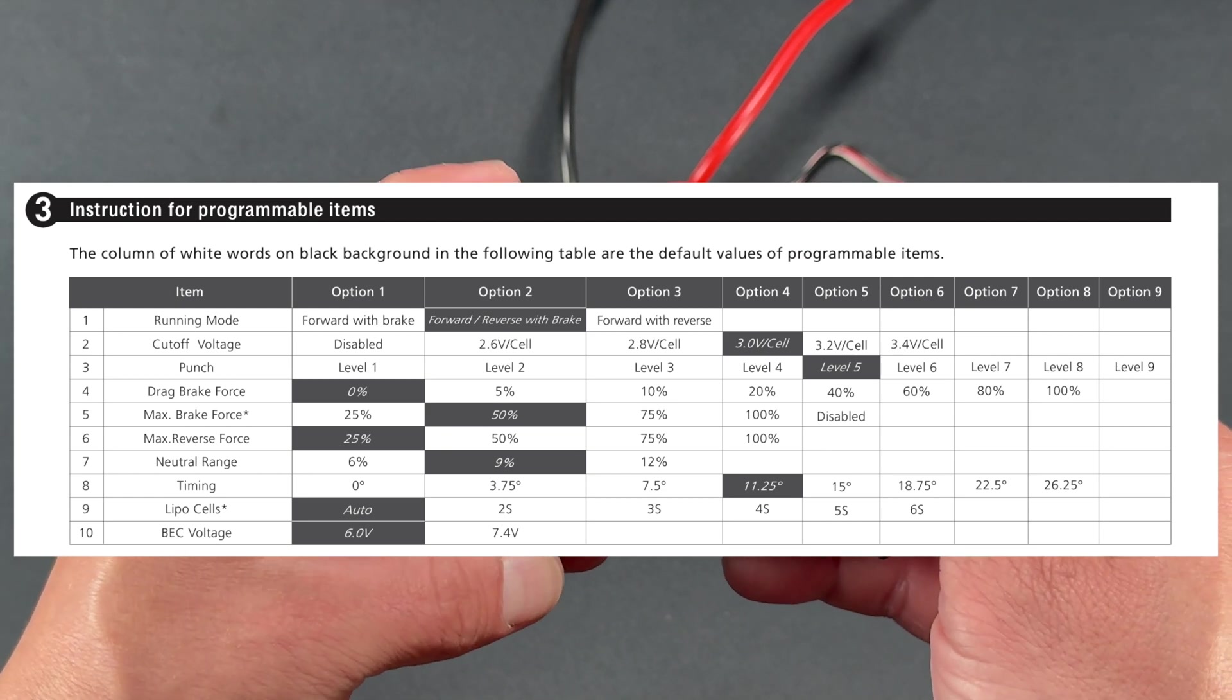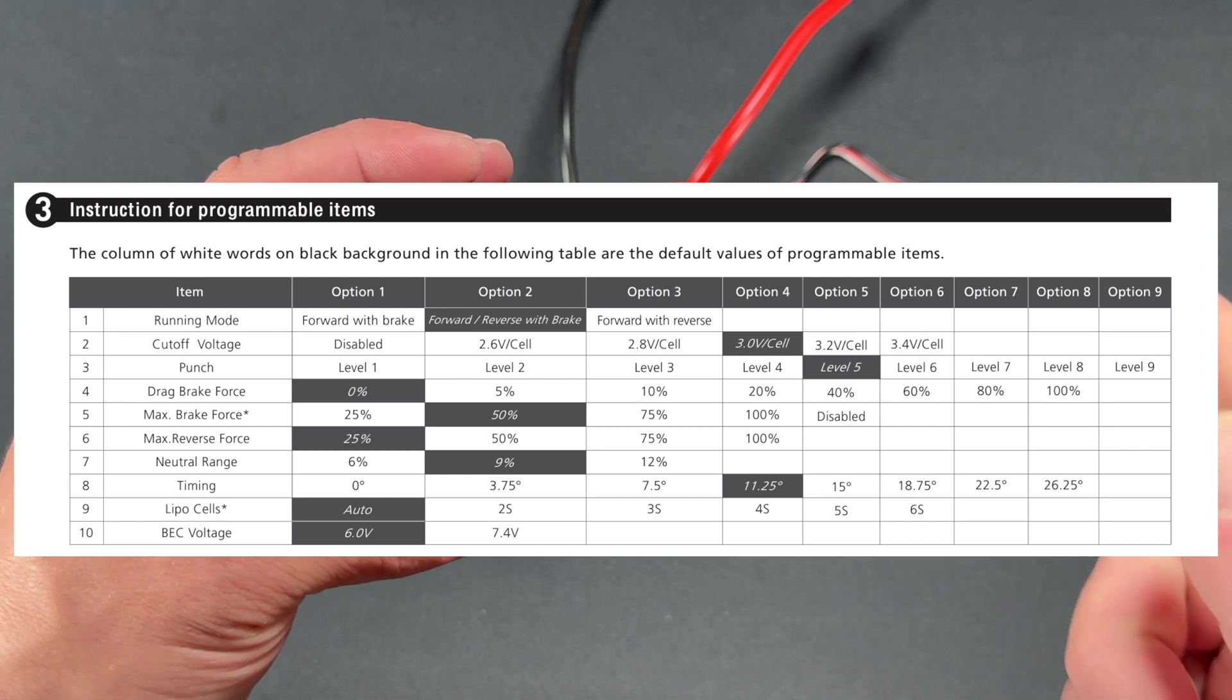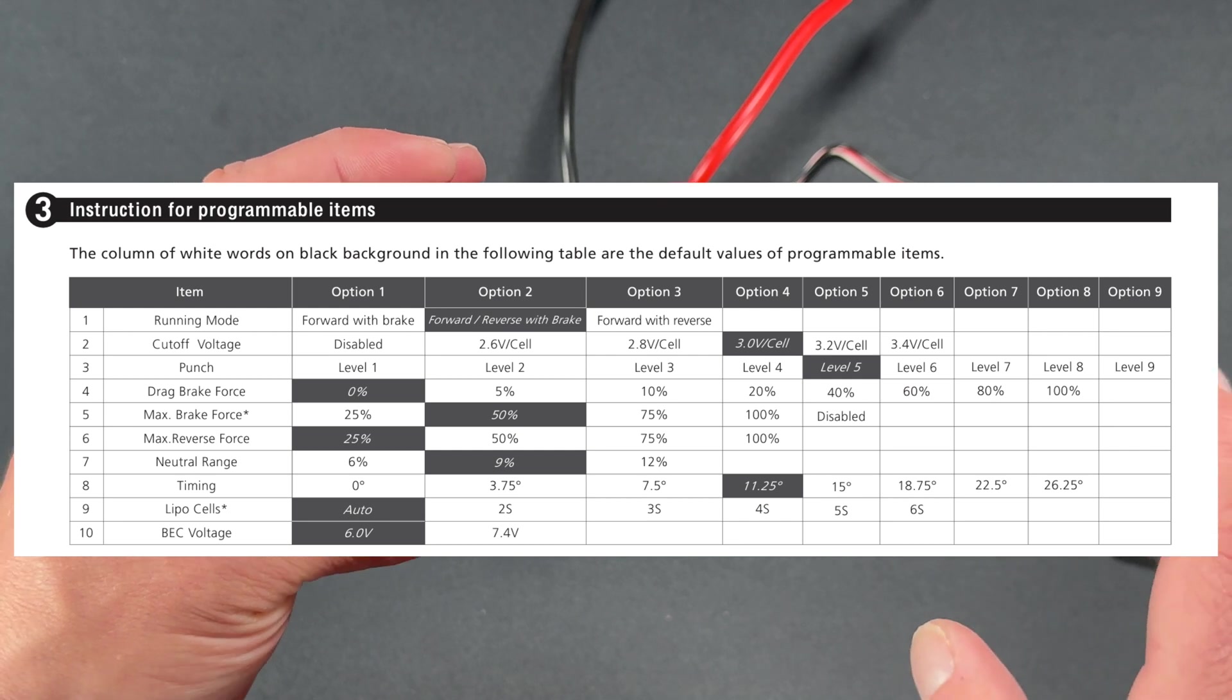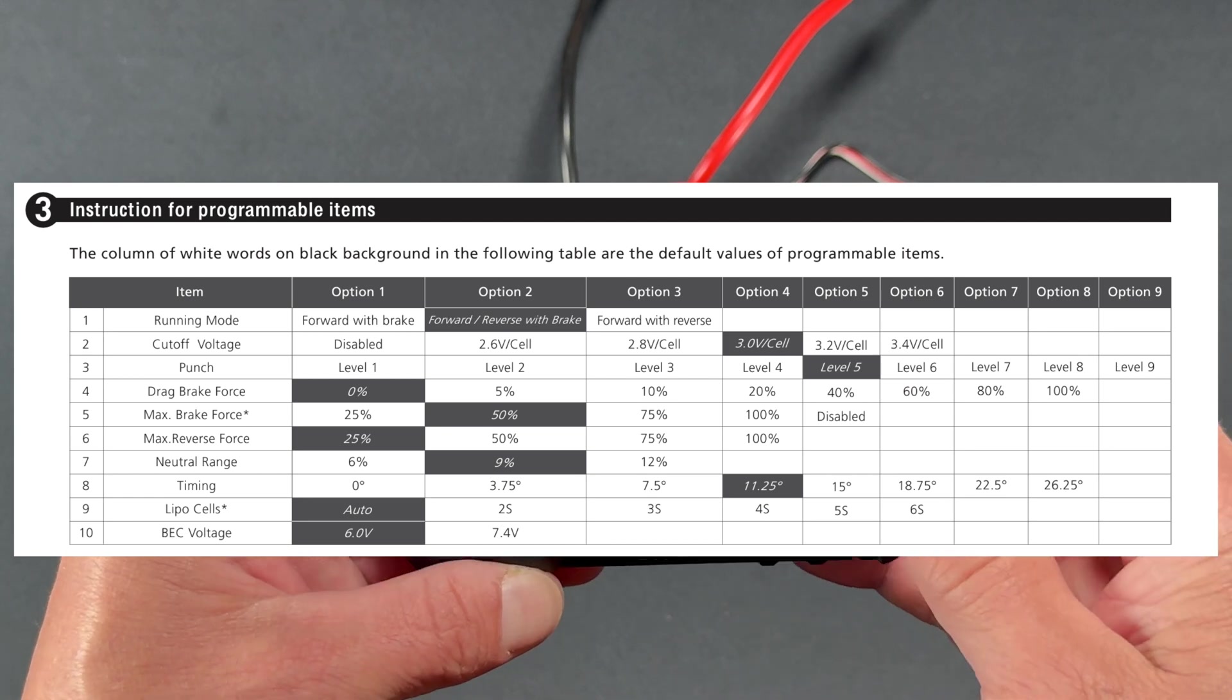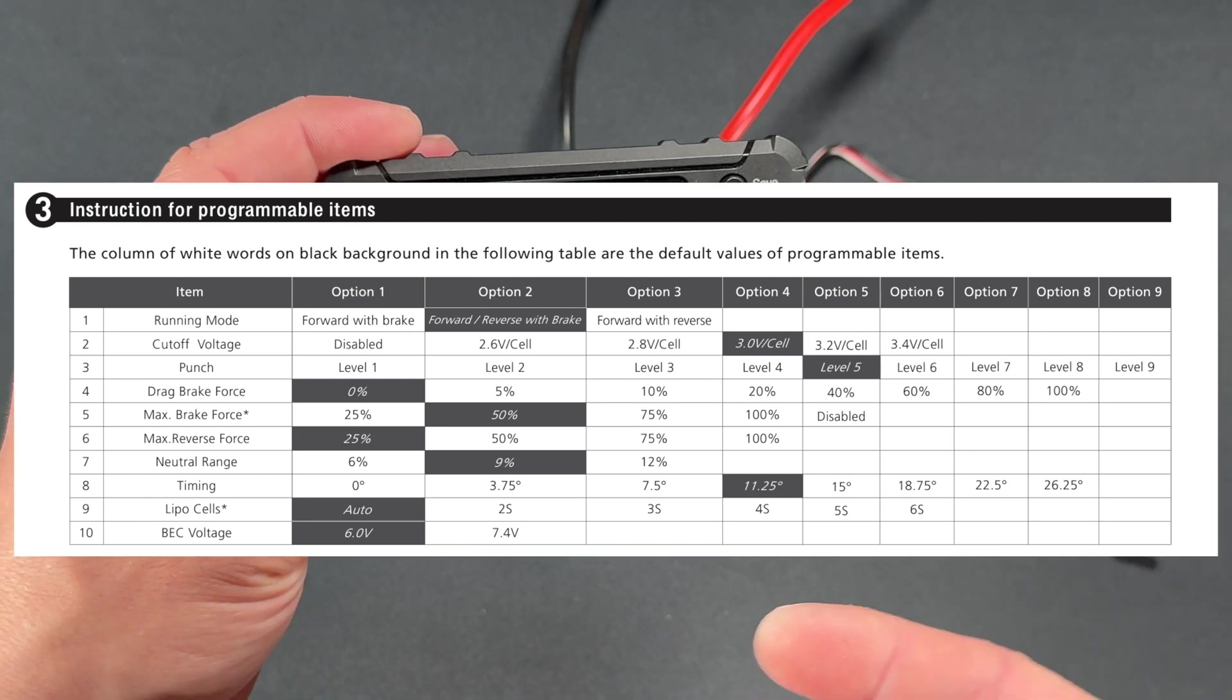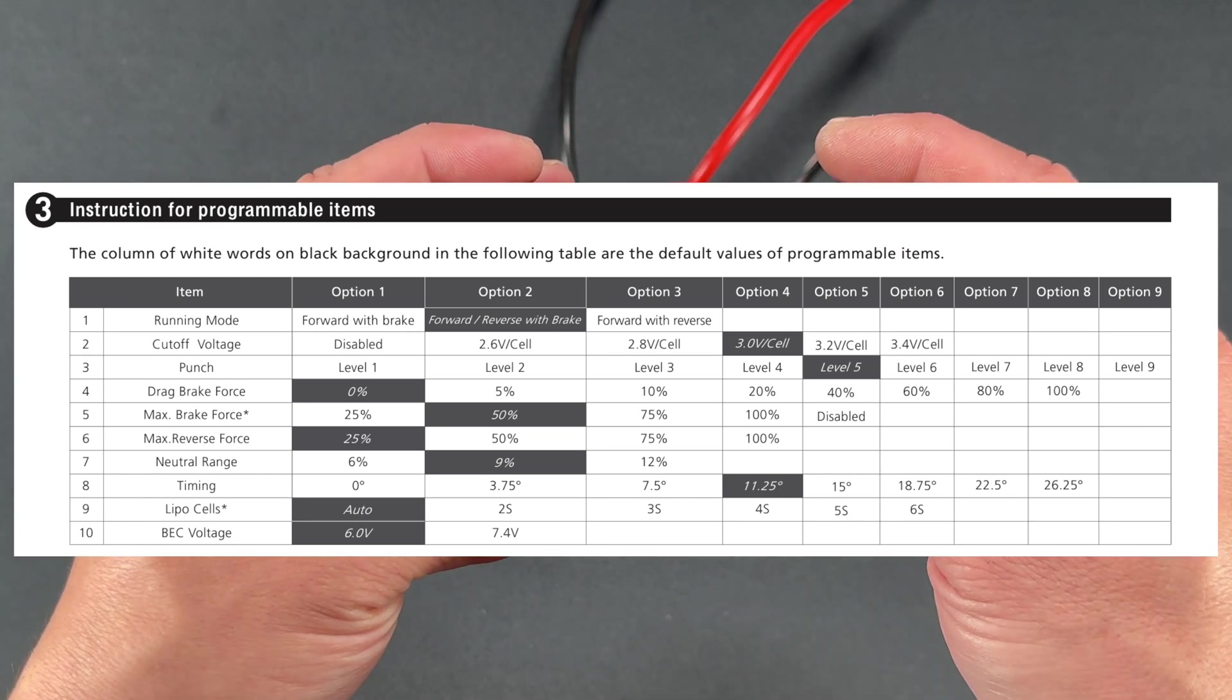Drag brake force is brakes at neutral. So as soon as you let off and the throttle gets back to neutral, the speed control is going to apply braking force to the motor. And it can help for track applications or where you have a lot of traction and you need to get on the brakes right away as you get into a corner. Drag brake allows you to adjust that. More brakes you use, and drag brake is included, kind of the higher the temperatures are going to be, so you keep an eye on stuff like that.